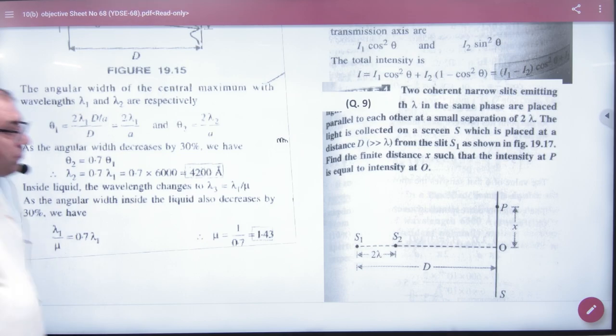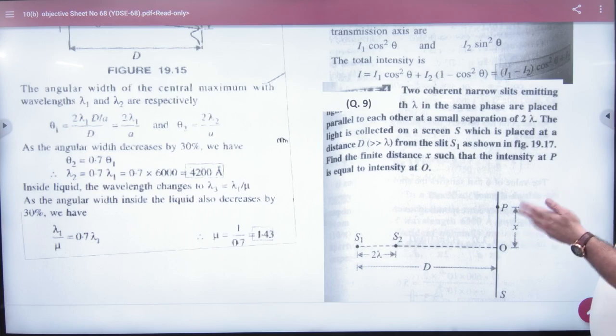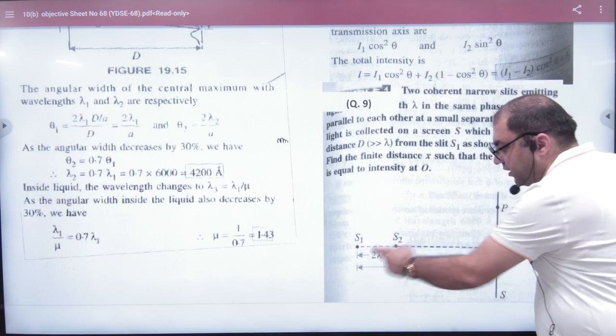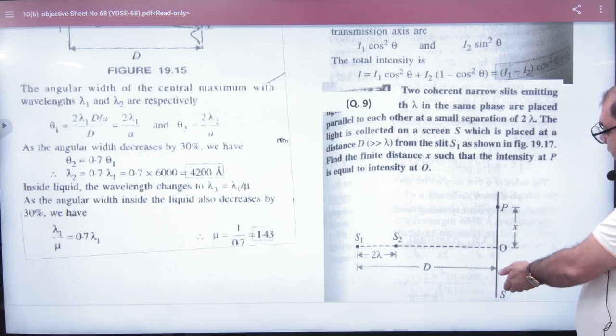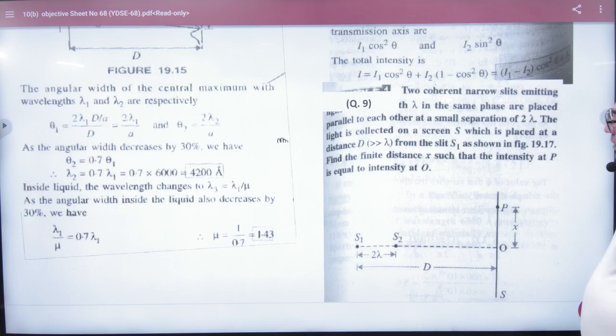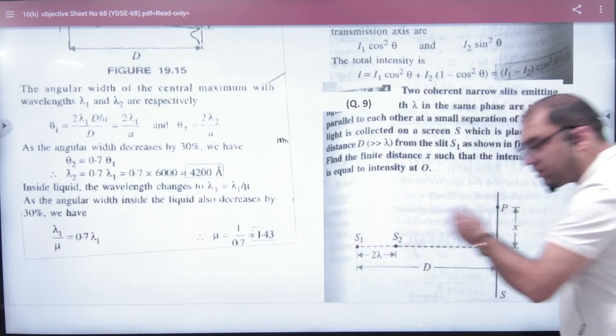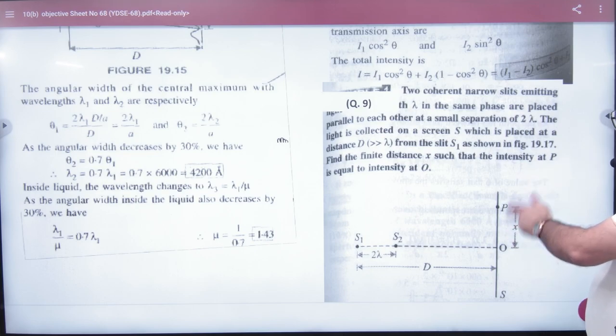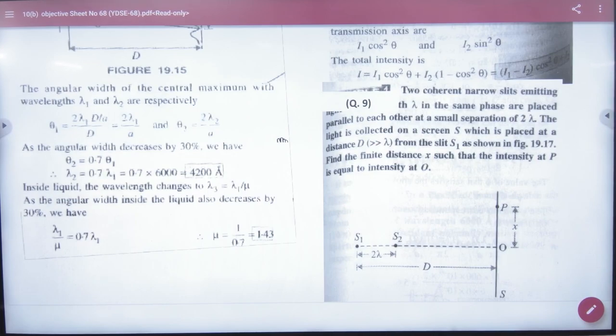The question is: two coherent narrow slits emitting light of wavelength λ in same phase are placed parallel to each other at a small separation of 2λ. There are two sources and what is the distance? 2λ. The light is collected on the screen S, which is placed at a distance of capital D from slit S1. Slits are placed like this. Find the finite distance x such that the intensity at point P is equal to intensity at point O. Intensity P and O are exactly the same. So this is the question. Let's see how the diagram will become.